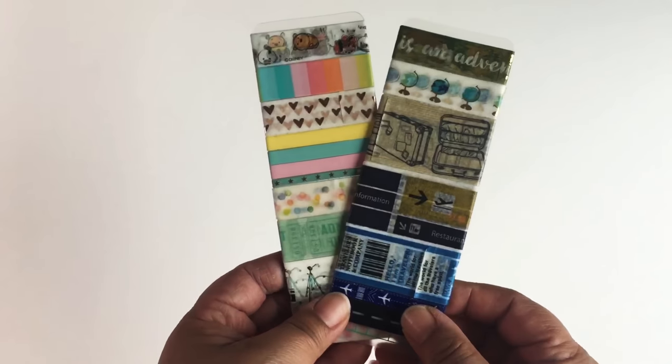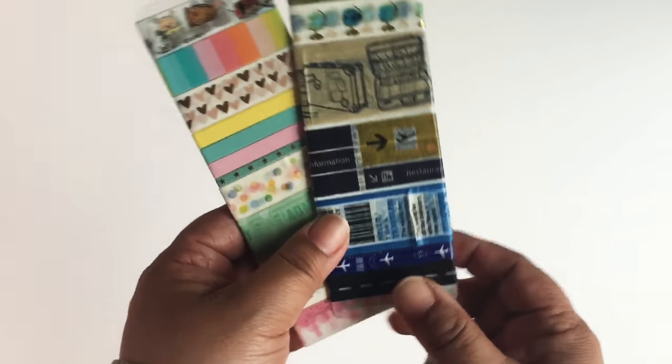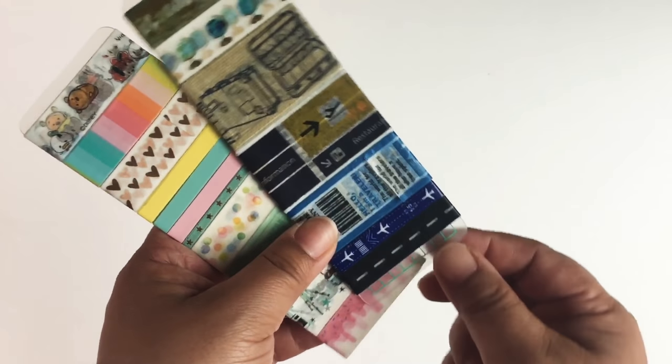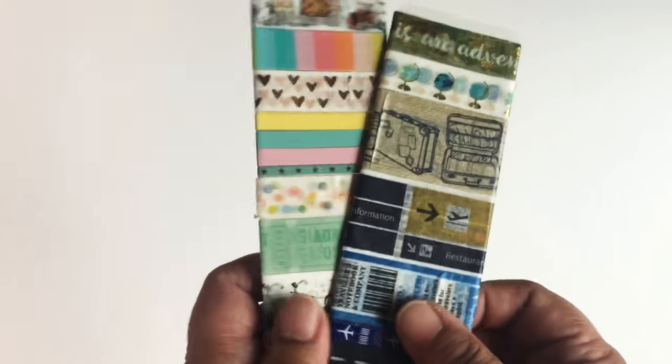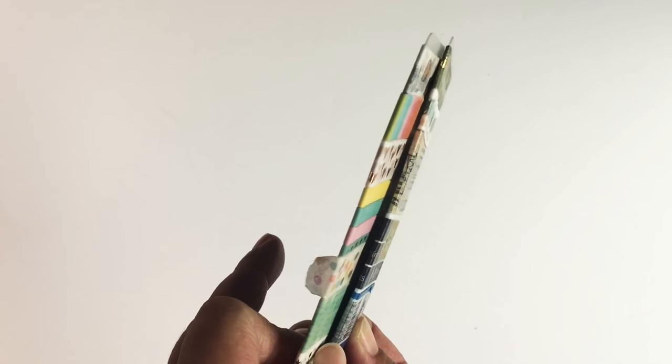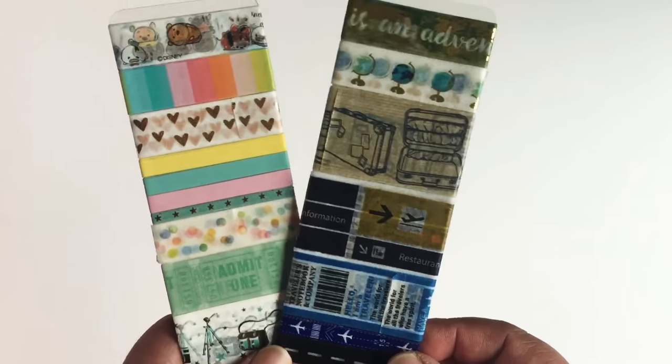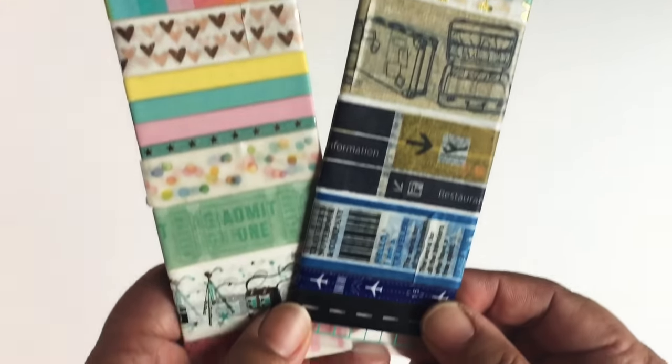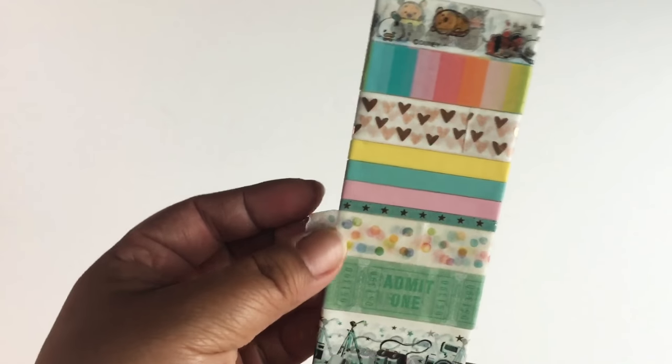Washi cards. I just select a few of my favorite washi and wrap them around this plastic card that I purchased online. That way they're also easy to pack up in my bag. This one here is a general travel theme.